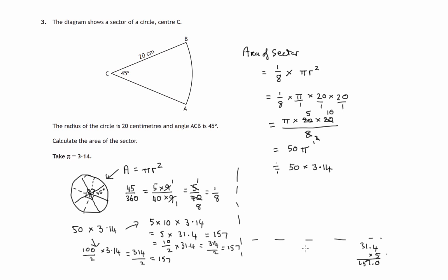So all sorts of ways of getting to the answer, which is 157. Now we're asked to calculate the area of the sector. It's important that we use the right units. Area is always measured in little squares. This radius is in centimetres, so they'll be square centimetres. So the area of that sector is approximately 157 square centimetres.